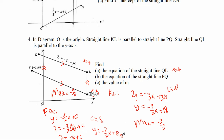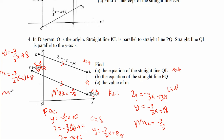Substituting coordinate (negative 2, M) into the equation of PQ: Y equals to negative 3/2 X plus 8. So M equals to negative 3/2 times negative 2 plus 8. The negatives cancel giving positive 3 plus 8, so M equals to 11.